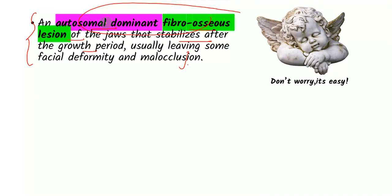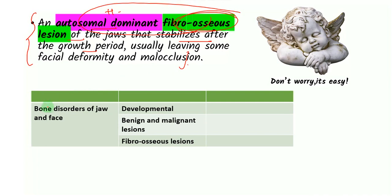So to understand fibro-osseous lesions, remember our classifications of bone disorders of the jaw face. All the bone disorders of the jaw face are mainly classified into developmental, which include macrognathia and micrognathia, et cetera. Then they're classified into benign and malignant lesions like osteosarcoma and Ewing sarcoma, and then they're classified into fibro-osseous lesions. So fibro-osseous lesions are essentially those where the normal bone structure is replaced by fibrous connective tissue.